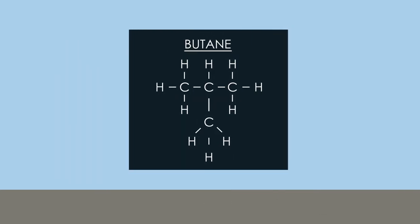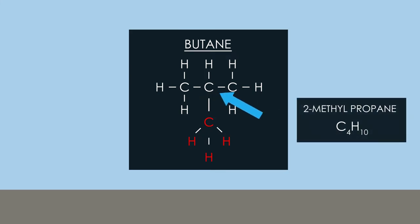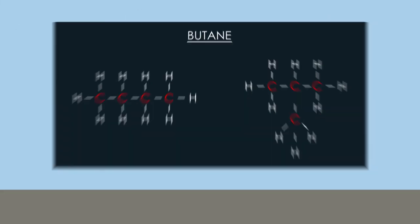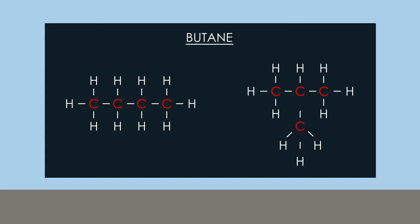The longest chain in this molecule is three carbon atoms long, so we say it is a form of propane with a methyl group sticking to the second or middle carbon atom, so its name becomes 2-methylpropane. Do not be confused — it is still an isomer of butane because these are the four carbon atoms.